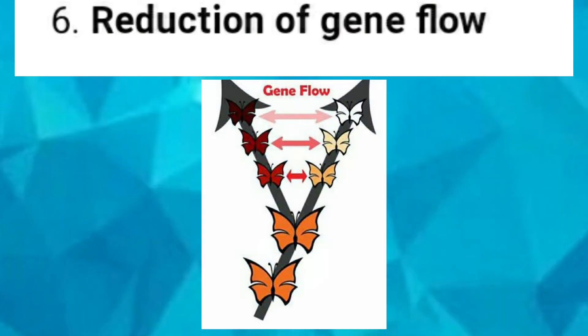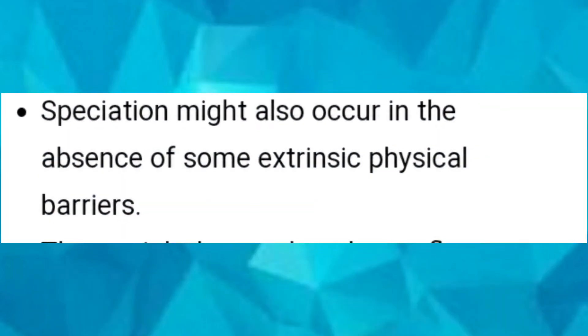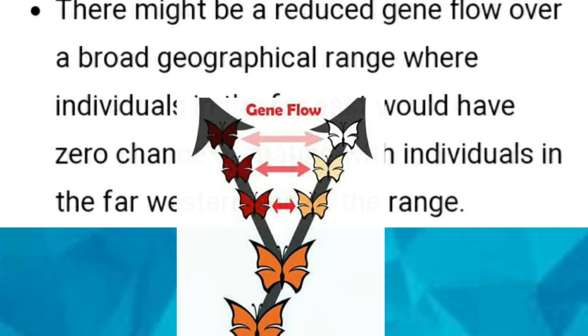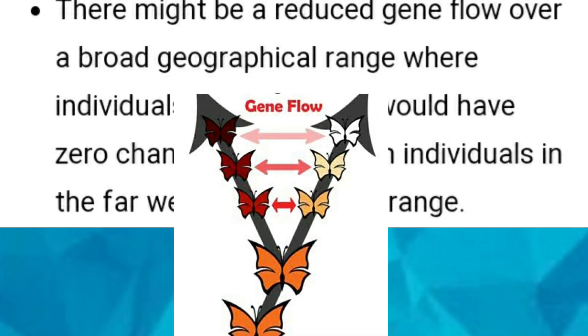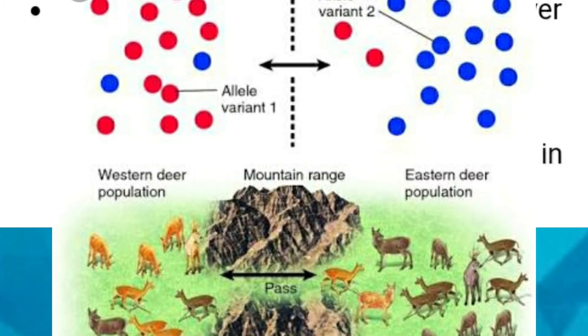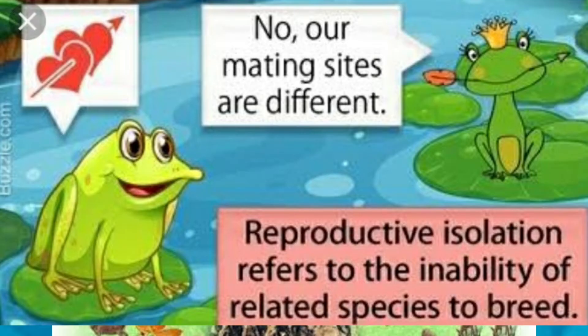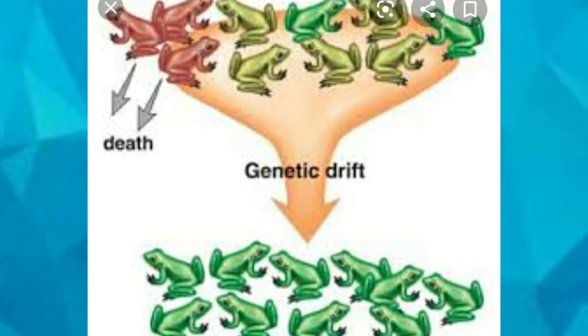The next factor is reduction of gene flow. Speciation might also occur in the absence of extrinsic physical barriers. This might be a reduced gene flow over a broad geographical range where individuals at the far east would have zero chance of mating with individuals at the far western end. Additionally, if there are selective mechanisms like genetic drift at the opposite ends of the range, the gene frequency would be altered and speciation would be ensured.